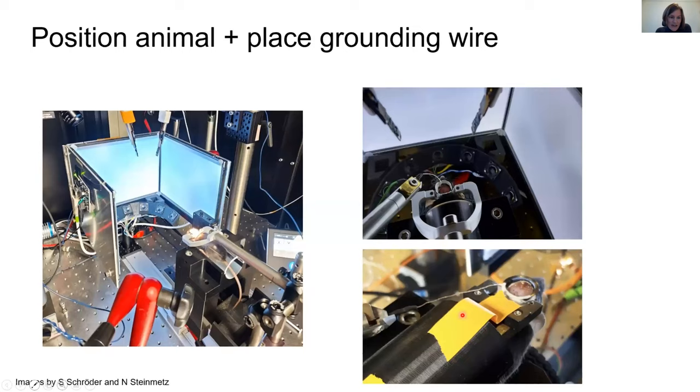Once you've done this before you're recording, you can now position the animal and place the grounding wire. Here you see one of our setups. Here are the probes, here is the stage with the animal, and we have this nice way of actually moving this stage for the animal back and forth on these rails, so you head fix the animal really far away from where the probes are that you placed before. Once the animal is fixed, you can then push the whole stage underneath those probes, and this is a top view of the animal and the probes, and here you can already see the ground wire just on top of the skull.